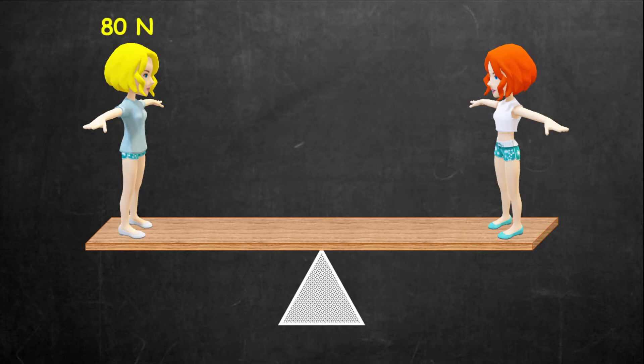Now, let's take Mary's weight to be 80 newtons. Her weight acts downwards on one side of the pivot, while Susie's weight is 70 newtons acting on the opposite side of the pivot.